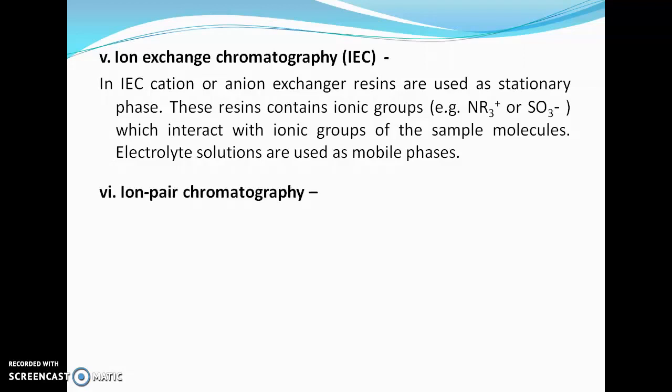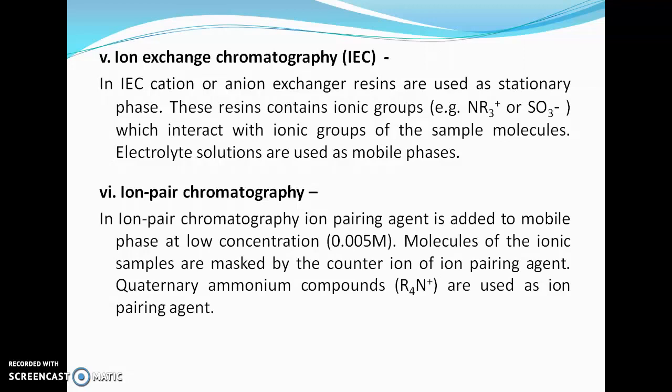Next is ion pair chromatography. In ion pair chromatography, an ion pairing agent is added to the mobile phase at low concentration. The molecules of the ionic sample are masked by counter ions of the ion pairing agent. Quaternary ammonium compounds are generally used as the ion pairing agent. Ion exchange chromatography and ion pair chromatography are two different techniques of chromatography.